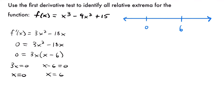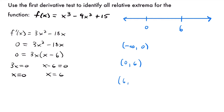Now we can see that we have three different intervals to test. We have an interval from negative infinity to 0, then from 0 to 6, and then from 6 to infinity. So our three intervals are negative infinity to 0, 0 to 6, and 6 to infinity.